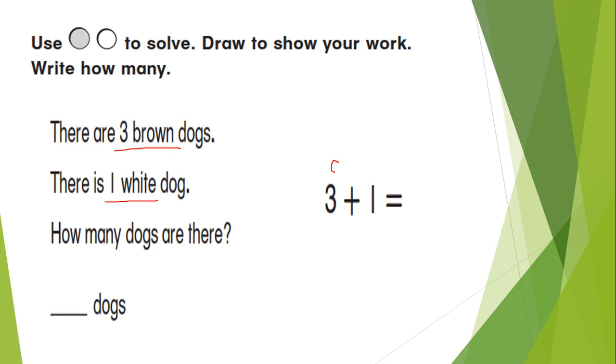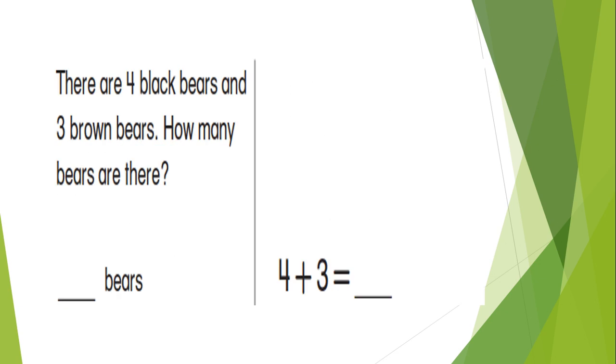For the three, let's make three circles. Then we have one more. Now let's put it together and count: one, two, three, four. So three plus one equals four. We have four dogs.